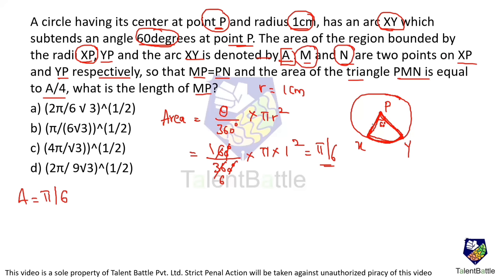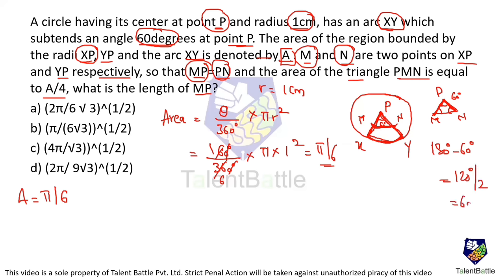Since MP = PN, triangle PMN is isosceles with the apex angle at P being 60°. The base angles must each equal (180° - 60°)/2 = 60°. So all three angles are 60°, making triangle PMN equilateral.